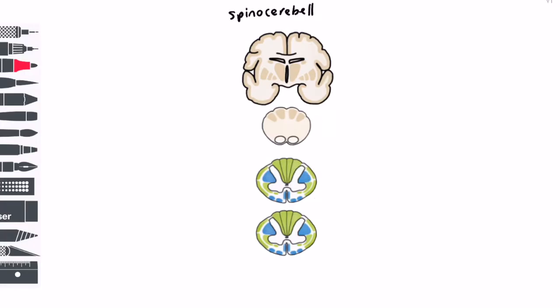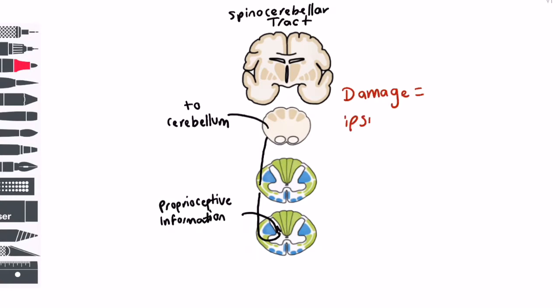There are also tracts which travel into and out of the cerebellum via the cerebellar peduncles of the brainstem. I won't go into the details of the spinocerebellar tracts here, but they behave functionally as ipsilateral tracts and thus damage will cause an ipsilateral ataxia.